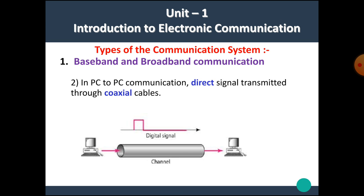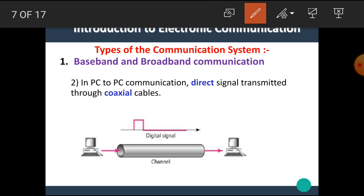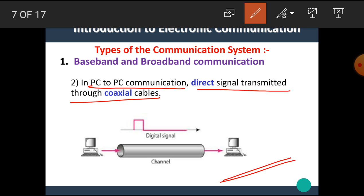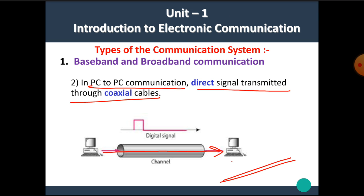Another example of the baseband communication system is PC-to-PC communication, where the direct signal is transmitted through coaxial cables. This example shows that one PC communicates with another PC through the coaxial cable and the signal is directly transmitted. I hope you understand the baseband communication system.